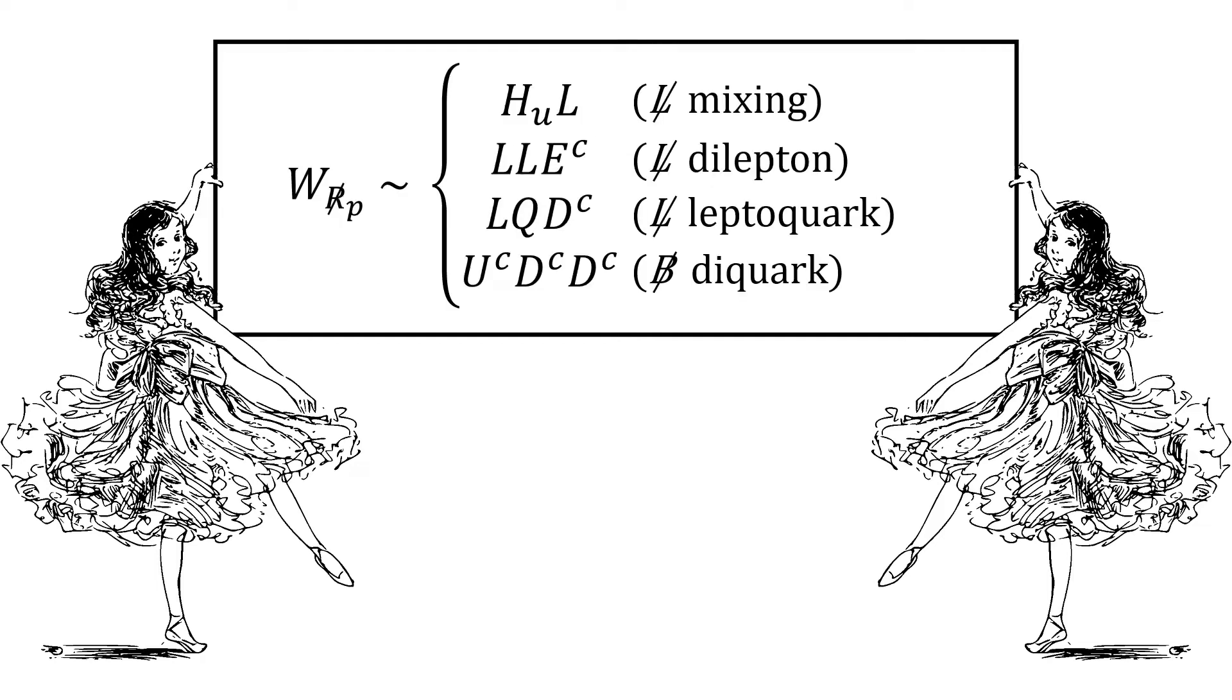However, it is possible to add terms to the superpotential for the MSSM that violate R-parity. The first three terms violate lepton number; the fourth term violates baryon number. The LQD and UDD operators imply leptoquark and diquark couplings, respectively, for the squarks.